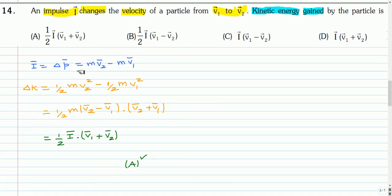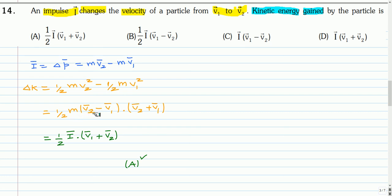The change in momentum, which is the impulse, is the final momentum minus the initial momentum; momentum is a vector quantity. The change in kinetic energy is half mV₂² minus half mV₁², which can be written as (m/2)(V₂ − V₁)·(V₂ + V₁) as vectors. Since m(V₂ − V₁) is the impulse vector I, this becomes half I dotted with (V₁ + V₂). So the correct option is option E.